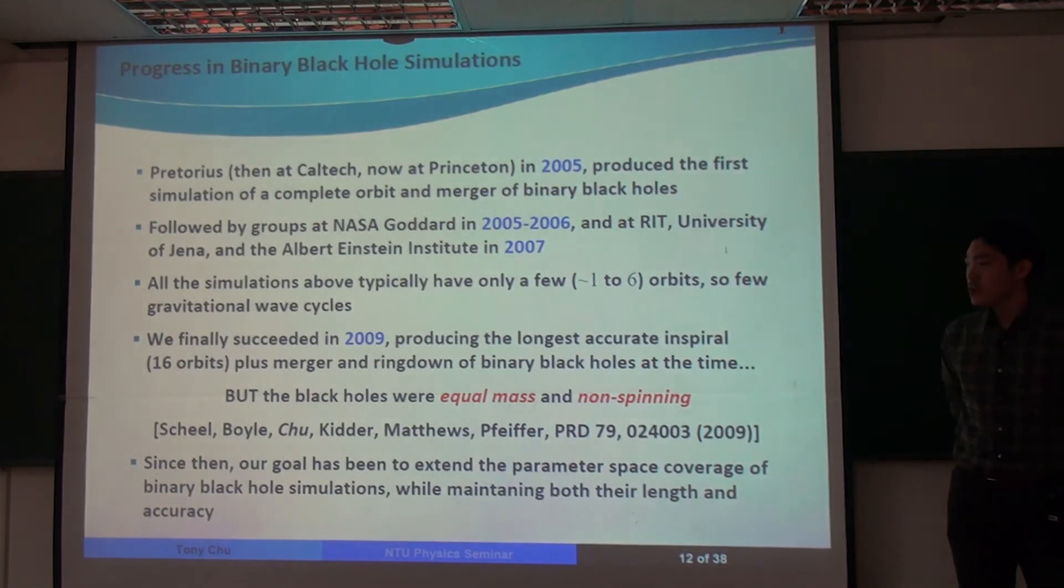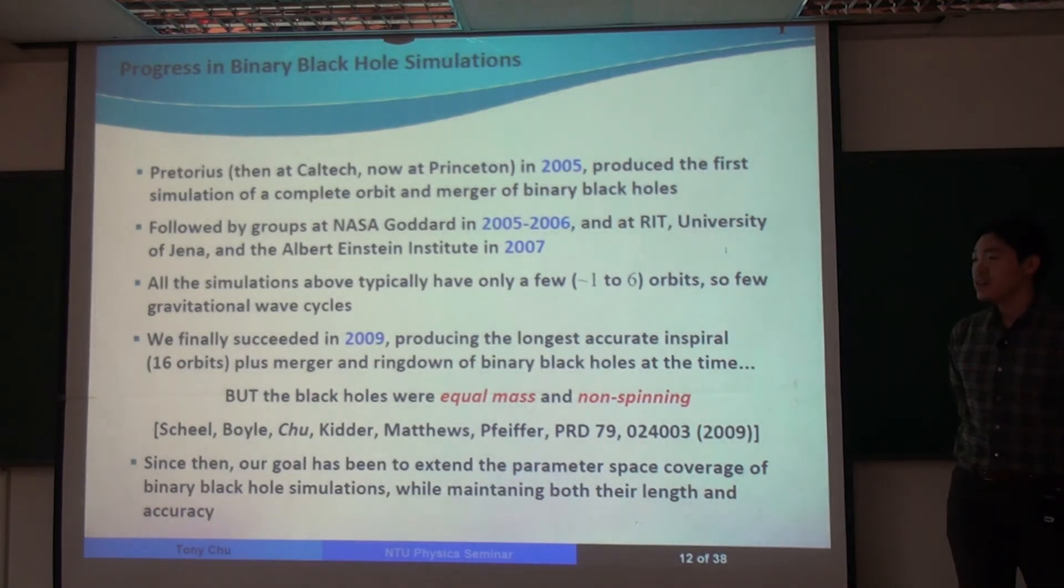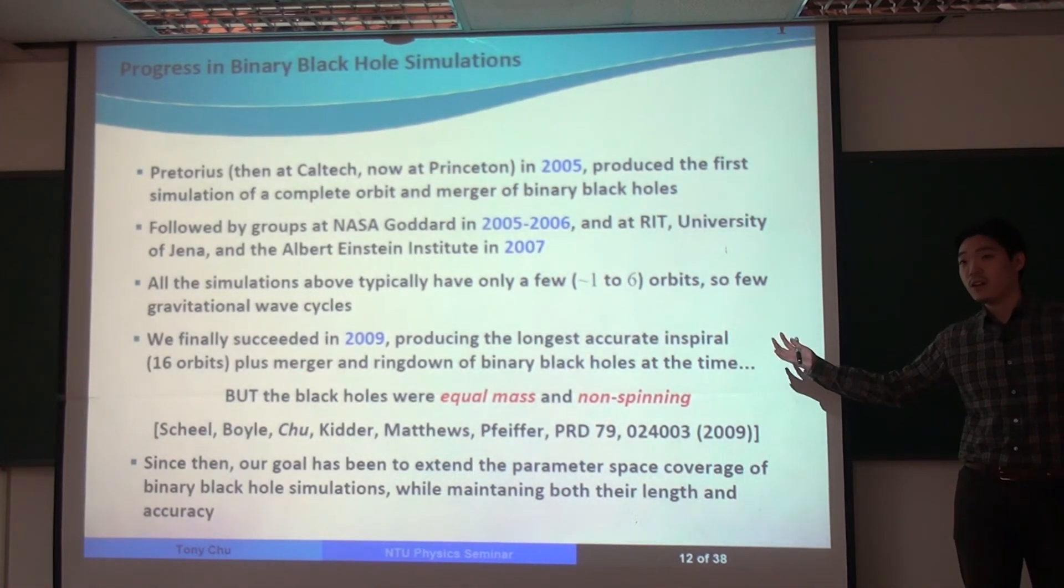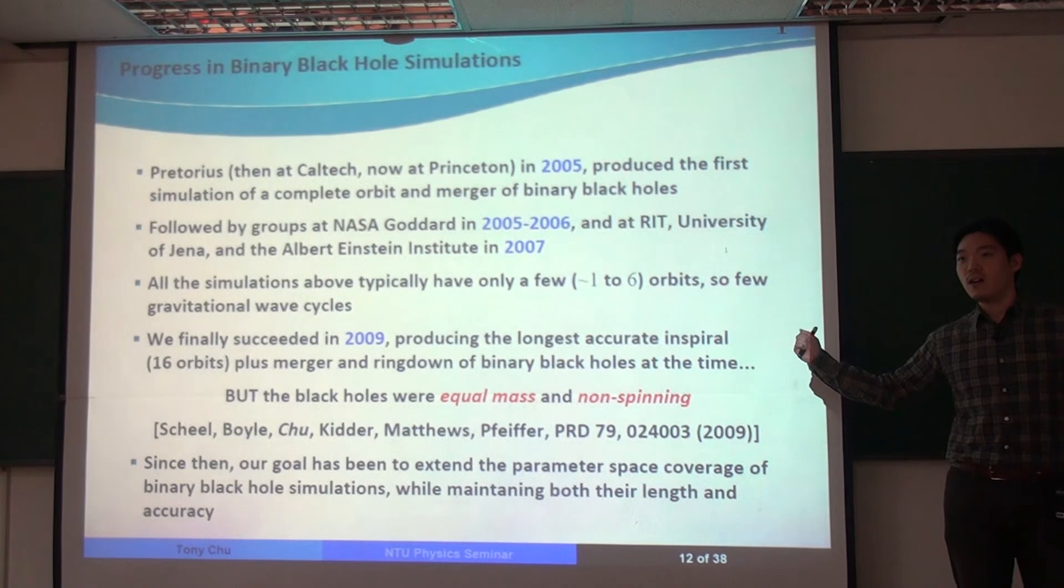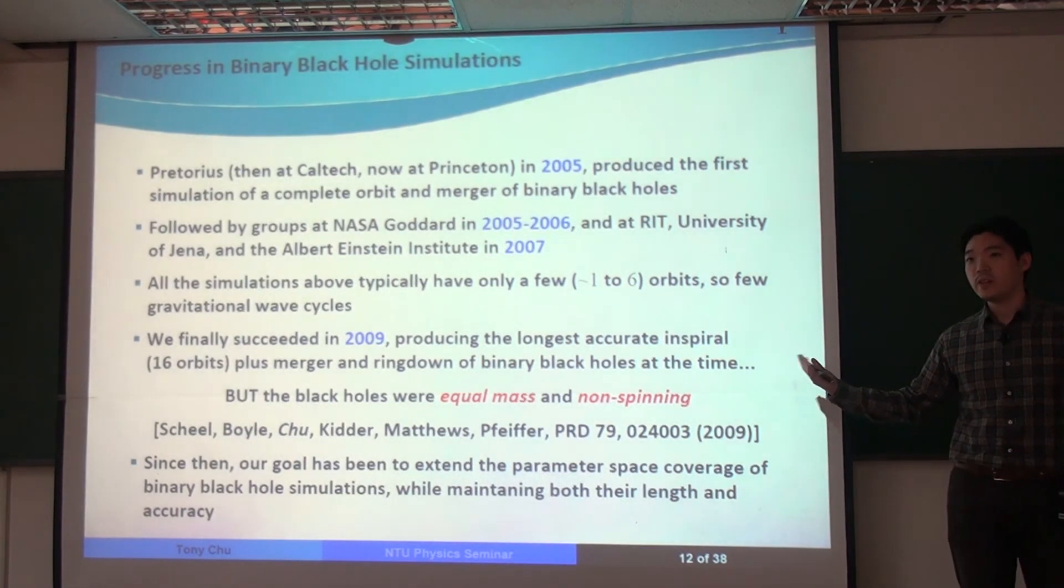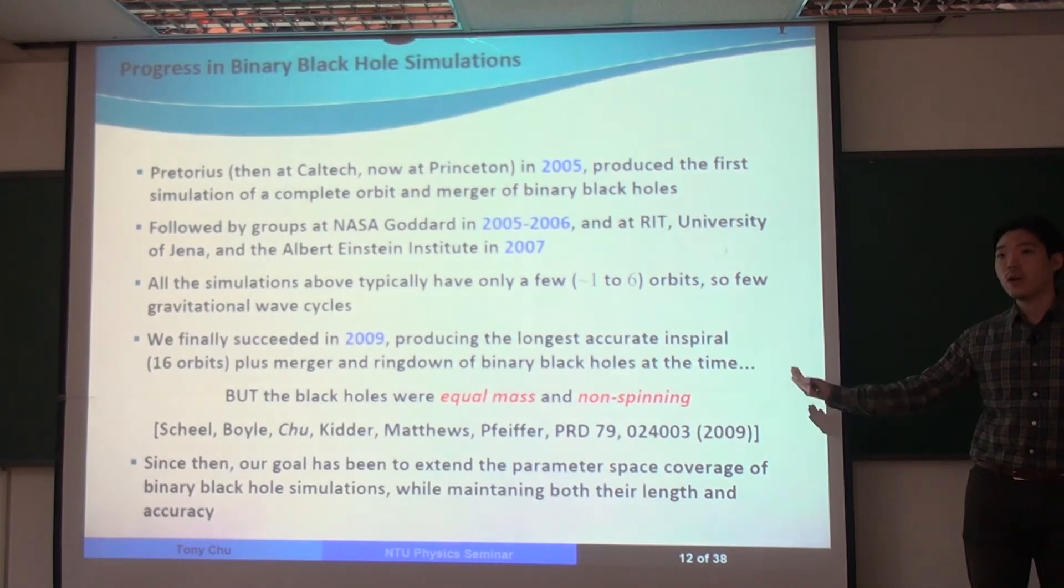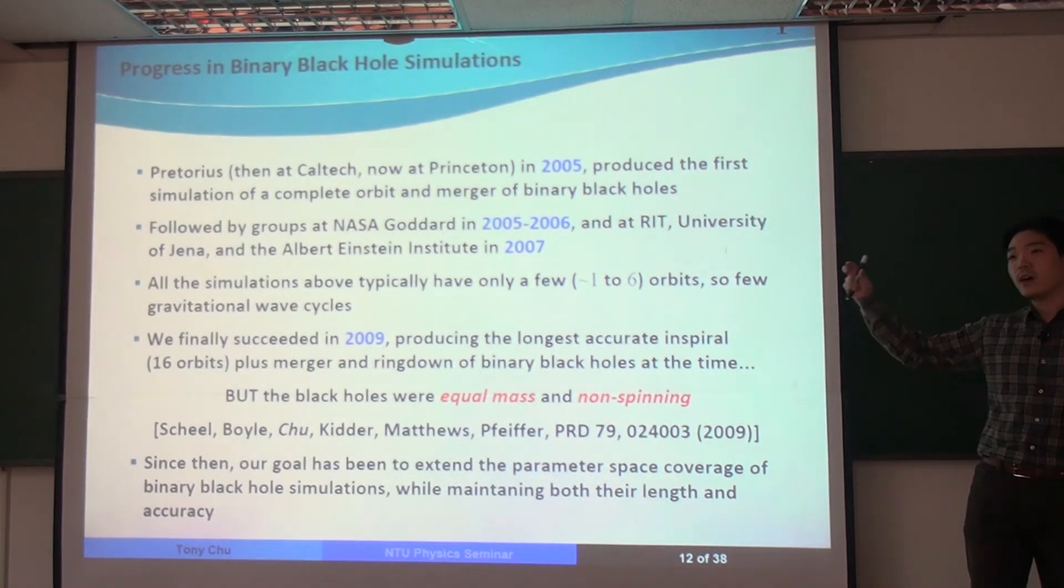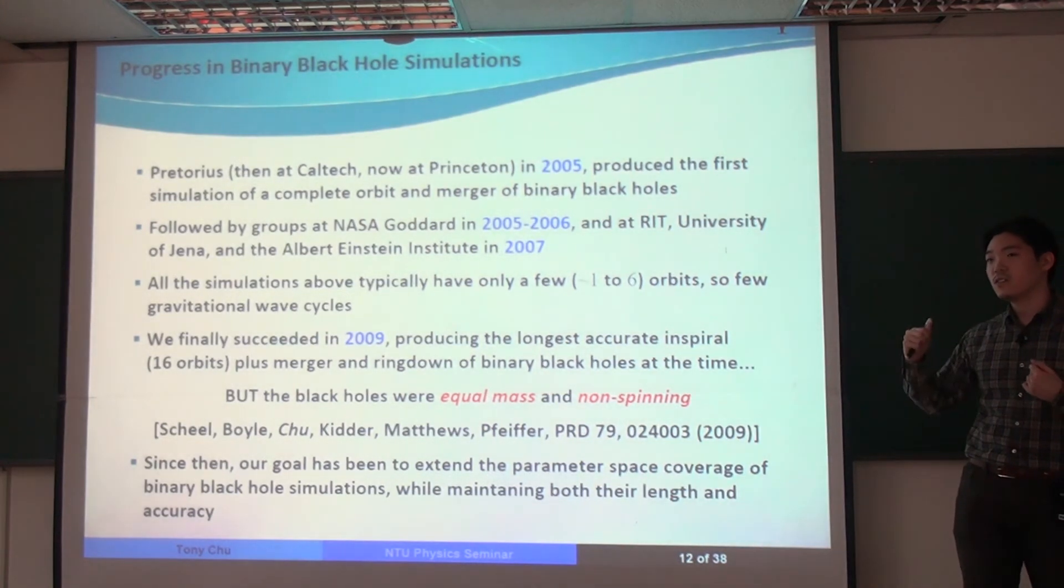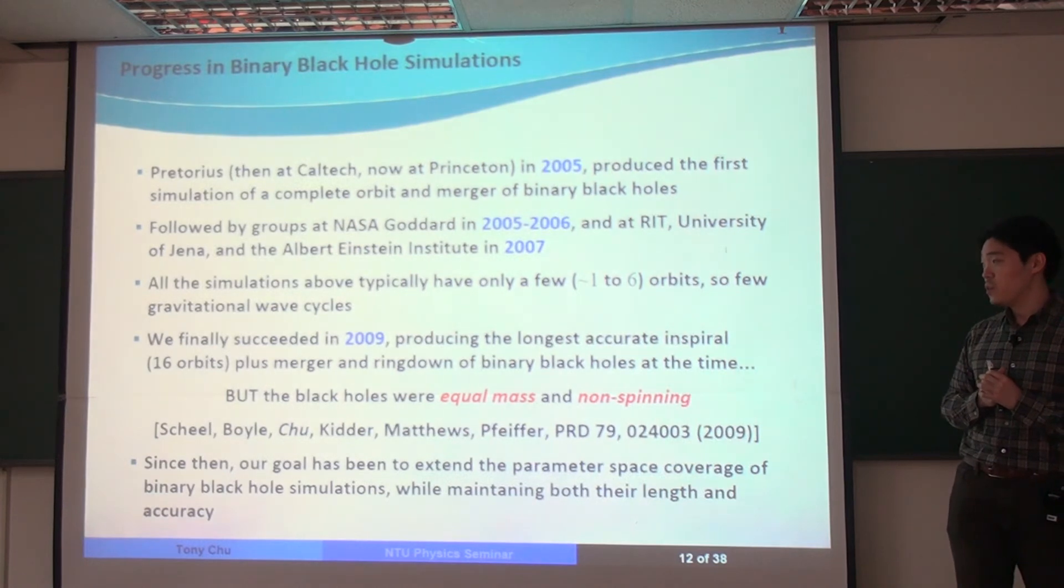So in our simulation, in principle, we can simulate as many orbits as we want by putting the black holes initially as far away as we want. But it just is more expensive to do because it increases the size of our computational domain. And the farther away the black holes are, the inspiral rate is slower. And so these factors just make the simulation as a whole much longer and more expensive. But in principle, it's doable.